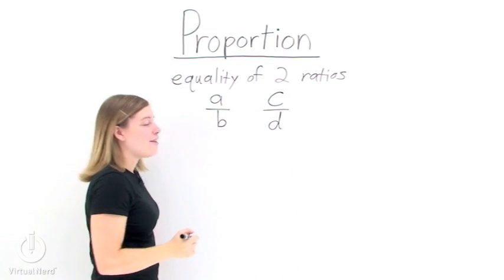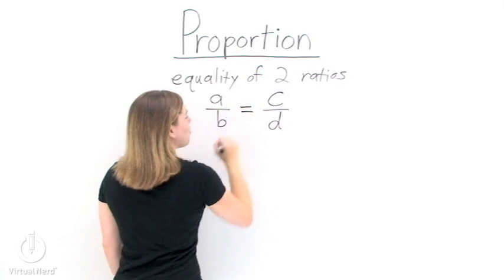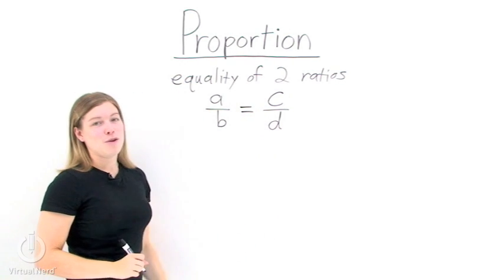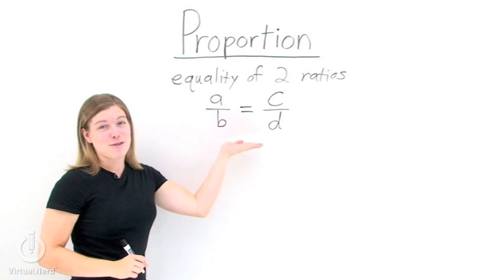That'll work. Now, to get a proportion, we put an equal sign between the two ratios since we have an equality. Now, we have a proportion.